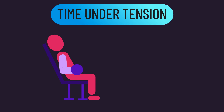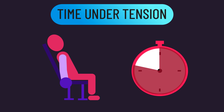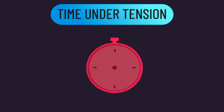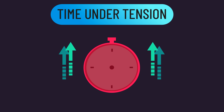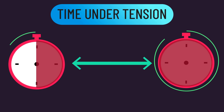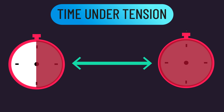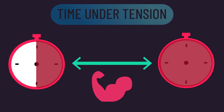Time under tension is widely held to be a fundamental muscle building principle — simply how long your set lasts. It's commonly said that extending your time under tension can confer additional muscle hypertrophy, with some also suggesting 30 to 60 seconds is the optimal time under tension range for maximizing hypertrophy.